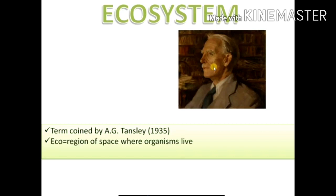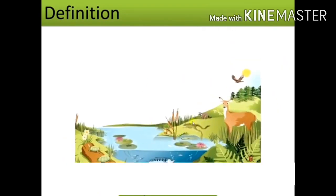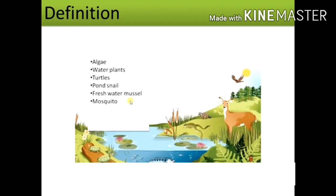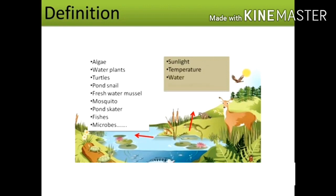Eco means the region of space where organisms live. We can say that an ecosystem comprises of various communities of living organisms like algae, water plants, turtles, pond snail, freshwater mussels, mosquito, pond skater, fishes, microbes, etc. Similarly, it also consists of sunlight, temperature, water, and dissolved oxygen, when we particularly talk about a pond ecosystem.